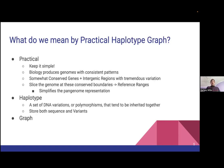So what do we mean by a Practical Haplotype Graph? "Practical" — from day one we said keep it as simple as possible. We realized that biology produces genomes with somewhat consistent patterns: you have somewhat conserved genes, and then intergenic space that has a lot of variation. With those conserved genes, we can use the boundaries of the genes to basically slice the genome up into anchor points, or what we call reference ranges. This really heavily simplifies the pan genome representation.